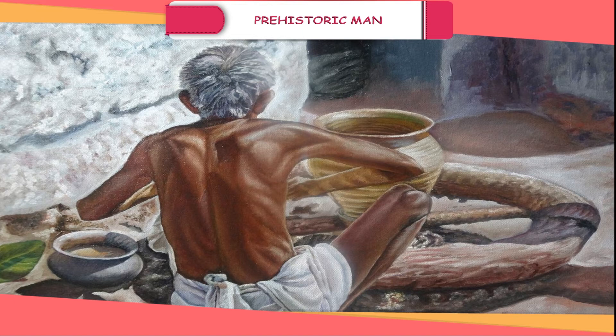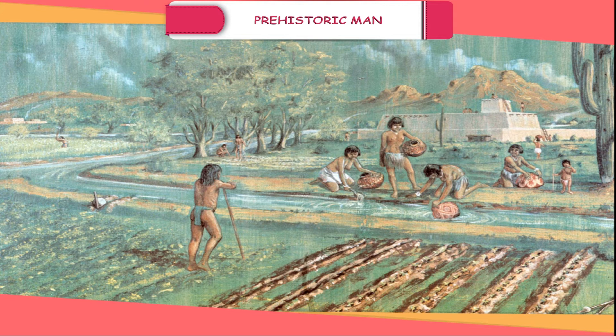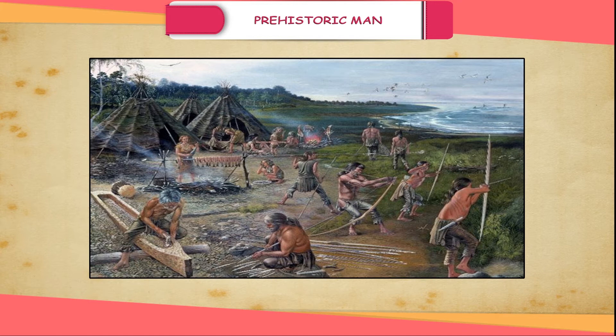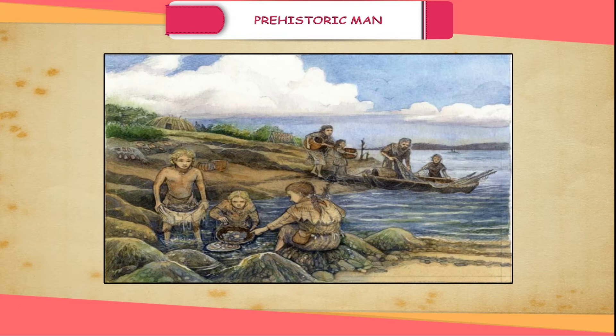The beginning of settled life in villages by prehistoric man began during this period. Farming and herding of cattle: early man cleared the land near the banks of rivers. He sowed or scattered seeds in the field and watered them. He learnt to take care of the crops. Thus, the food gatherer became a food producer.